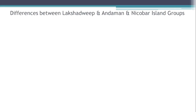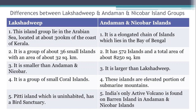Let's see the question: differences between Lakshadweep and Andaman Nicobar Island groups. First point — Lakshadweep: this island lies in the Arabian Sea, located at about 300 km off the coast of Kerala. Andaman Nicobar Island: it is an elongated chain of islands that lies in the Bay of Bengal.